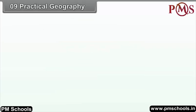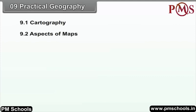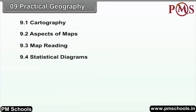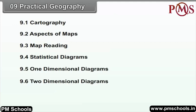Chapter 9: Practical Geography. We will study the following points in this chapter: 9.1 Cartography, 9.2 Aspects of Maps, 9.3 Map Reading, 9.4 Statistical Diagrams, 9.5 One-Dimensional Diagrams, and 9.6 Two-Dimensional Diagrams.